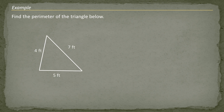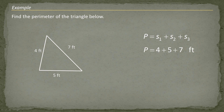In this example, we're going to find the perimeter of the triangle below. We just add up the three sides: side one is 4, side two is 5, and side three is 7. Adding from left to right: 4 plus 5 is 9, and 9 plus 7 is 16. The perimeter of the triangle is 16 feet.